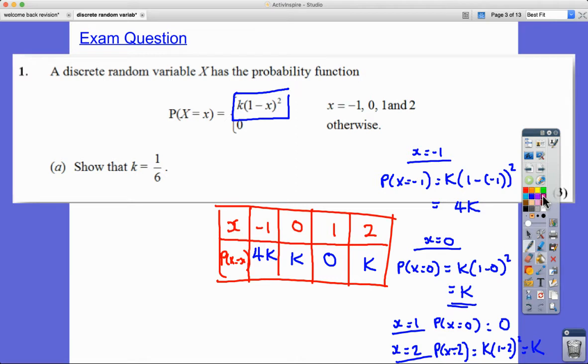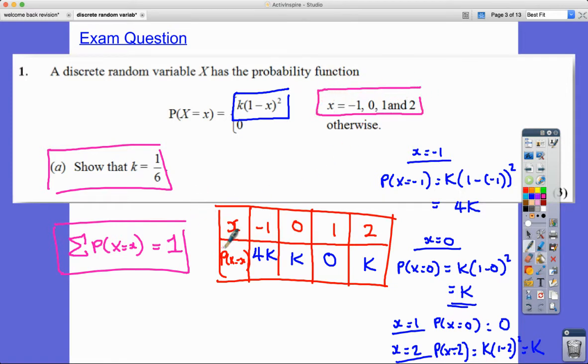Now then, my next job is, in this question, show that k is equal to one over six. Now, I've already said that the sum of all of these probabilities is always equal to one. They should all add up to one because they're the only x values that we're taking. And obviously, the probability of one is certainty. So we're certain we're going to get one of them. Now, what I can see here is, therefore, that 4k plus k plus zero plus k must be equal to one. And if I simplify this left-hand side, I've got 4k, 5k, 6k. So 6k equals one. k must be equal to one over six, as required.